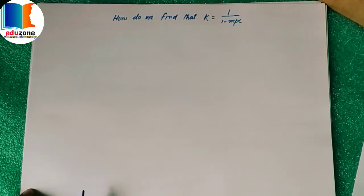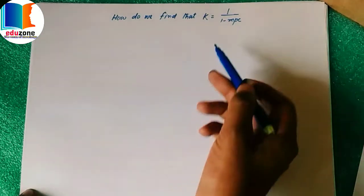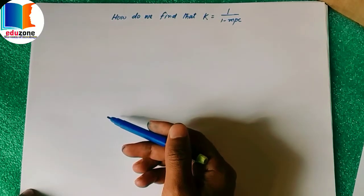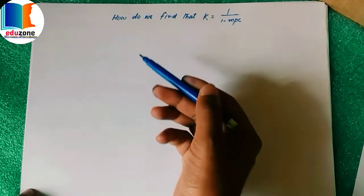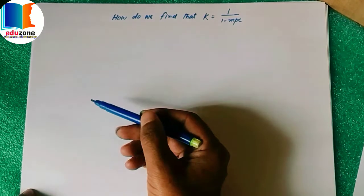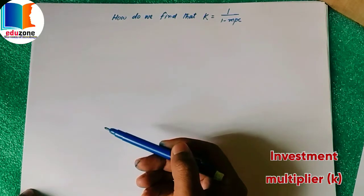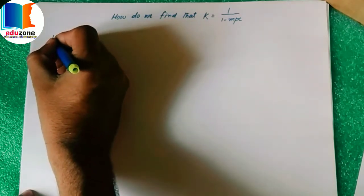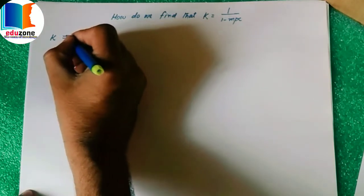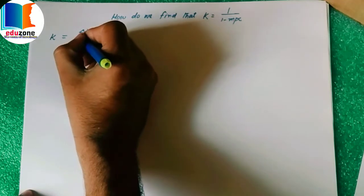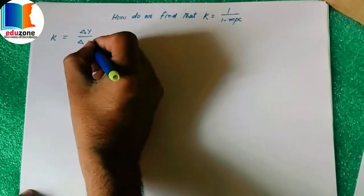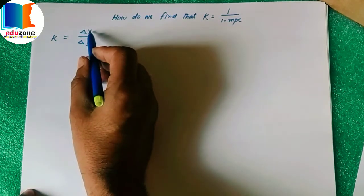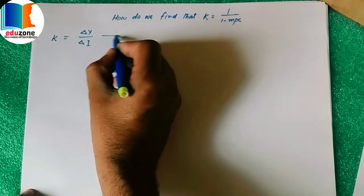Hello dear viewers, today in this video we will learn about the formula of the multiplier, or the investment multiplier. First of all, we must know that the investment multiplier shows the change in income due to the change in investment. So we can say that multiplier, symbolized as K, equals ΔY divided by ΔI — that is, change in income due to change in investment. Let's mark this as equation one.